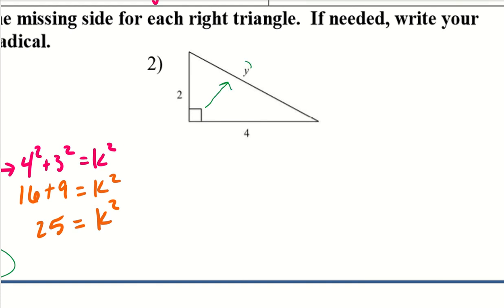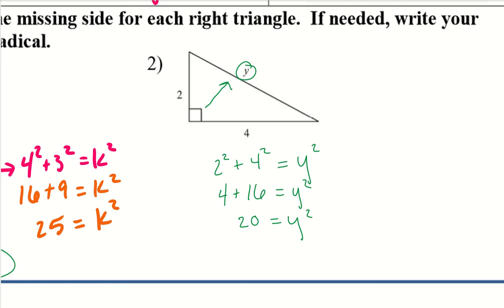For the second problem, opposite the 90 degrees is Y, so Y squared is on the right side. Then I have 2 squared plus 4 squared. 2 squared is 4, and 4 squared is 16 — remember, it is 4 times 4, not 4 plus 4 or 4 times 2. 4 plus 16 gives me 20 equals Y squared. Taking the square root of both sides, 20 is not a perfect square, so I'll create a factor tree: 10 and 2, then 5 and 2. I have a pair of 2s — anything we have a pair of, we take out and put on the outside. Anything not circled stays under the radical. So 2 root 5 equals Y.